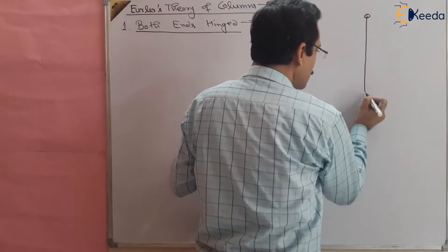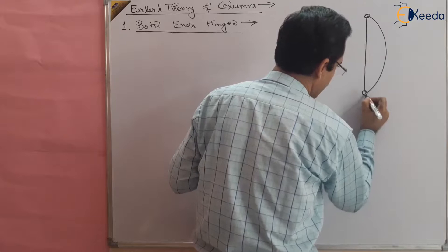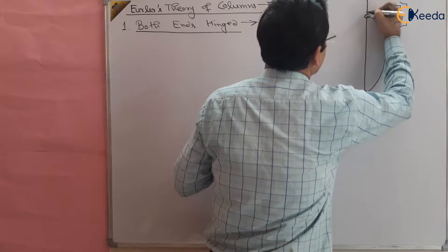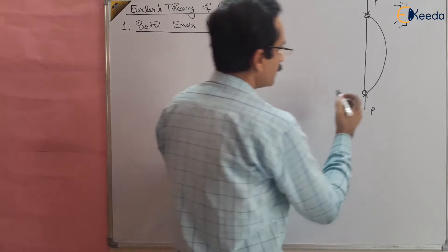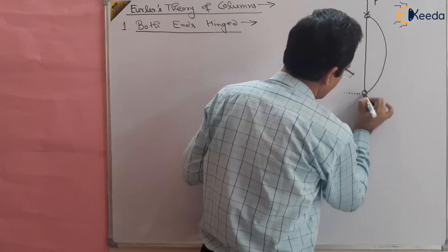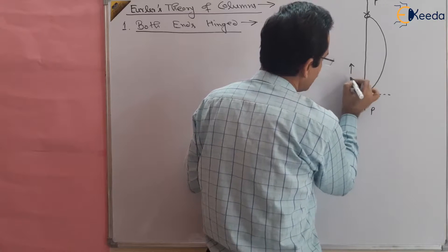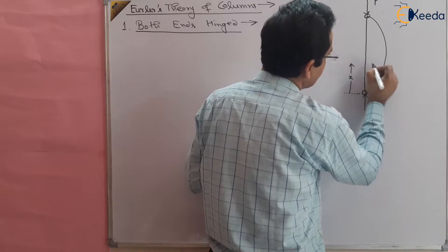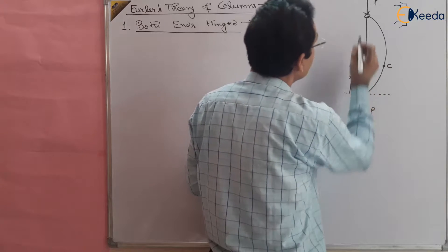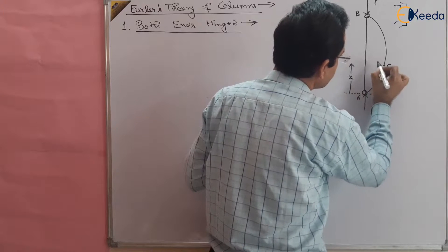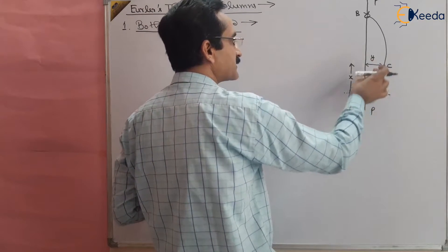Suppose this is the load applied, and after applying the load, suppose this is the deformation or bending in the beam. This is hinged from this side and the load applied is P. We want to find out the safe load given by Euler's theory. Let us say this is our reference point; from here we are taking the direction upward as the x direction. The deflection at a certain point C, at a distance x, is given by y.